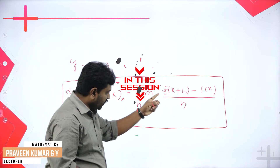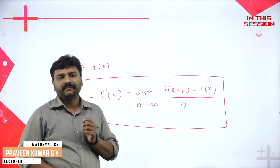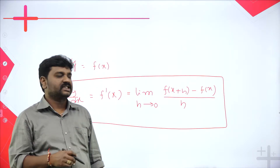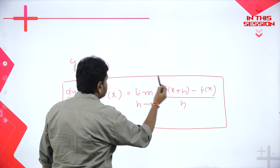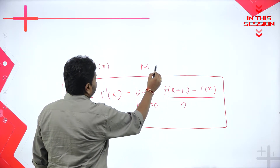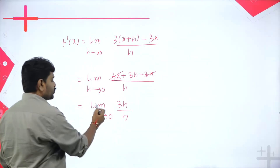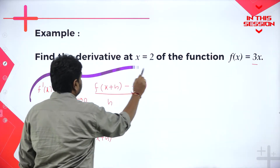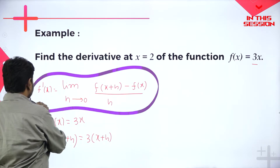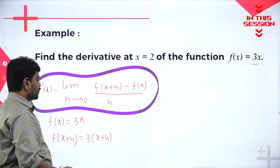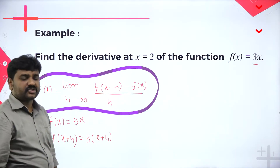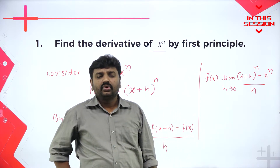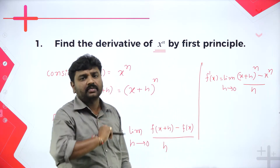When you apply a limit, the limit should exist. We have learned how to apply limits in past classes. The expression f(x+h) minus f(x) divided by h is called the method of first principles. If you substitute h=0 directly, it will become 0/0 — that is why we simplify first. f'(x) is defined as the limit as h tends to 0 of f(x+h) minus f(x) divided by h.